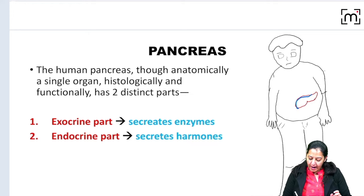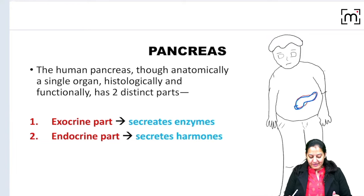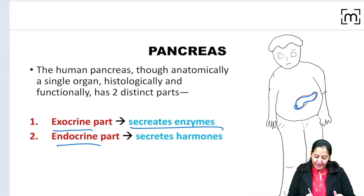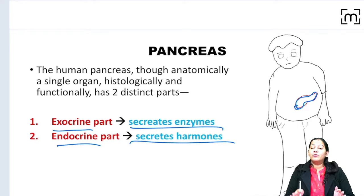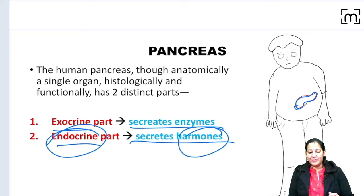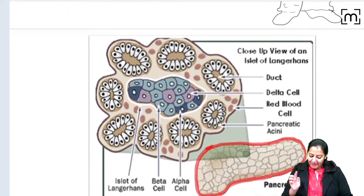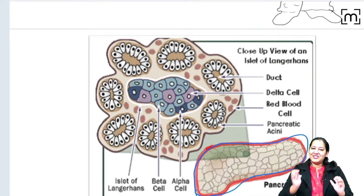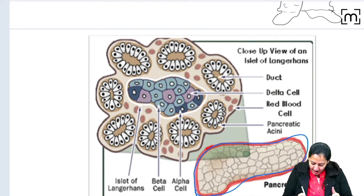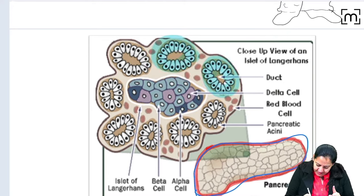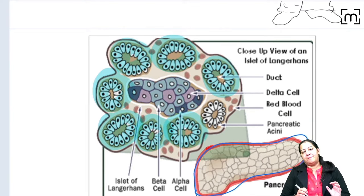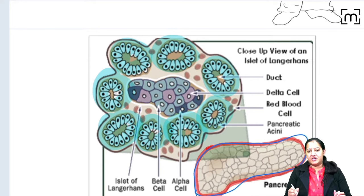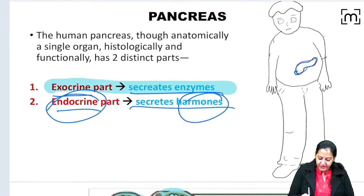What is the pancreas? The pancreas is an intra-abdominal organ. Although anatomically it's a single organ, histopathologically it is a double organ — it has two parts: the exocrine and the endocrine. The exocrine part secretes enzymes required for digestion, but currently I am not interested in that.